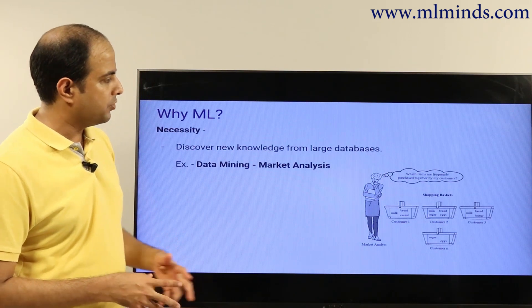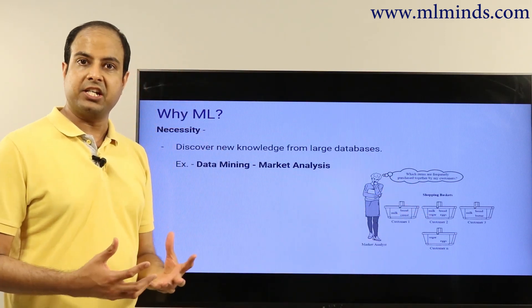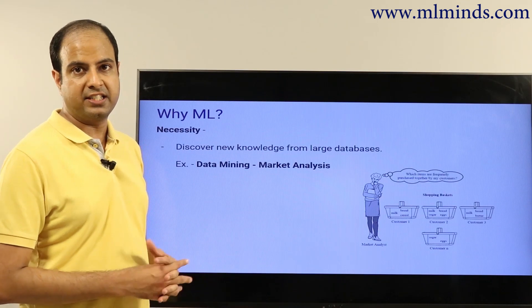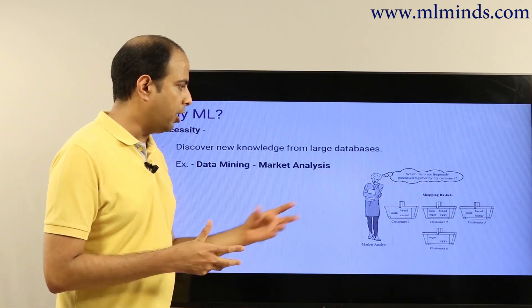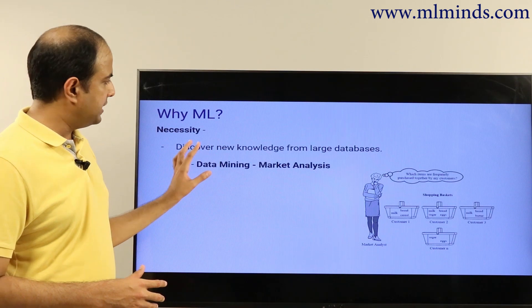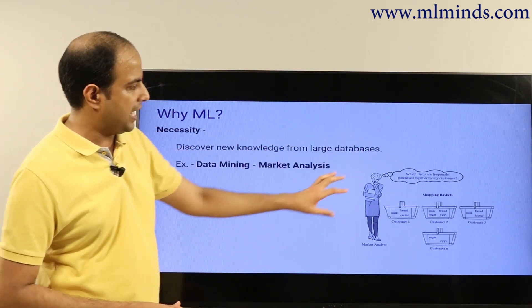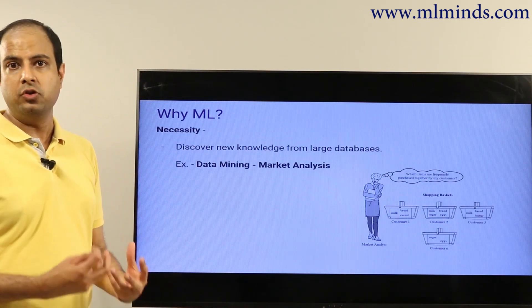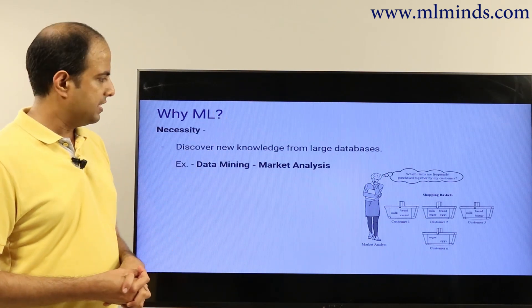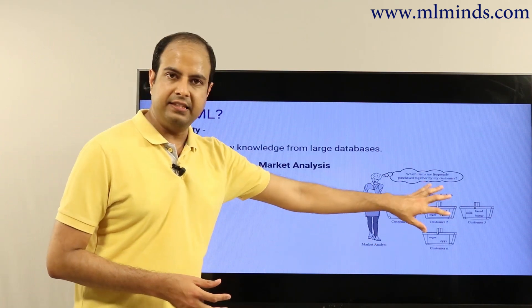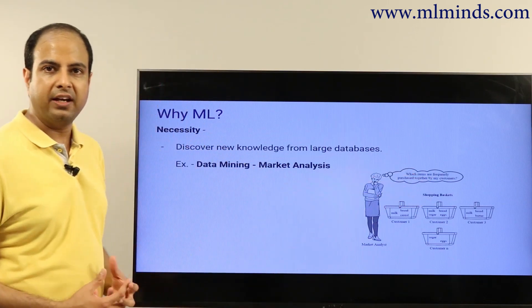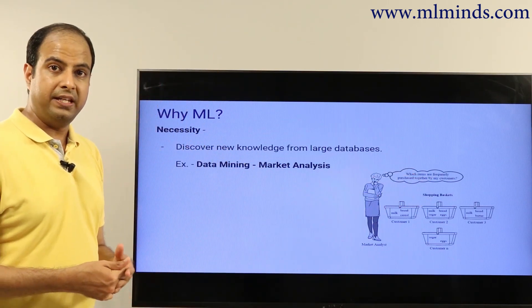There are many other applications. From supermarkets you can get a whole bunch of transactional data, where every transaction refers to the real bill a customer gets when they buy something from stores like Walmart. The idea is to discover new knowledge from these large databases — this is where data mining, which is closely related to machine learning, is very useful. You can analyze things that were bought together and understand which items were frequently co-bought.